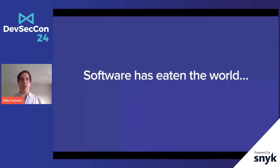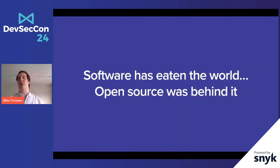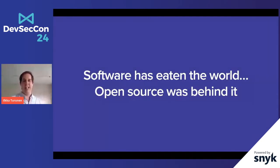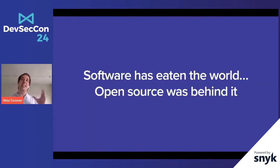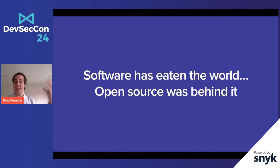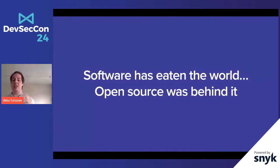We all know software has eaten the world. That line was spoken in 2010 by Marc Andreessen, but looking at it with 10 years of hindsight, one of the main culprits was open source. Depending on the programming language and the ecosystem, various types of software are mostly open source. Depending on what report you read, about 75 to 90% of your application is actually not your own — it's libraries you use, libraries of those libraries, transitive dependencies, containers, and operating system packages.